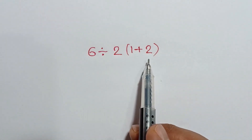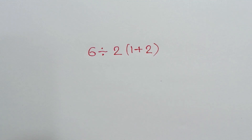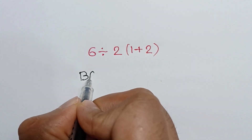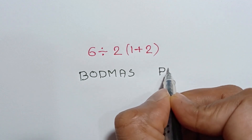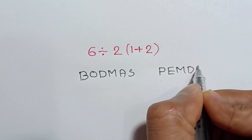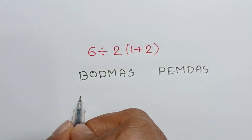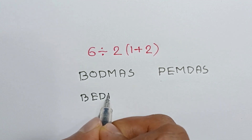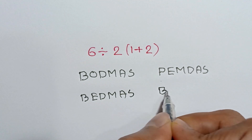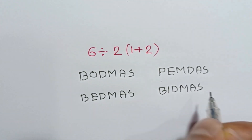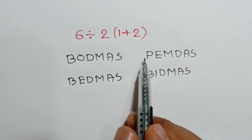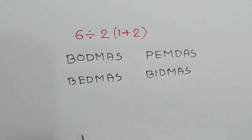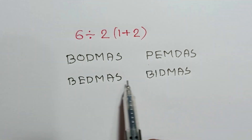To understand this problem, we have to know the order of operations first. To remember the order of operations, it is called BODMAS or PEMDAS or BEDMAS. All of these indicate that brackets or parentheses will work first, then order or exponents or indices.